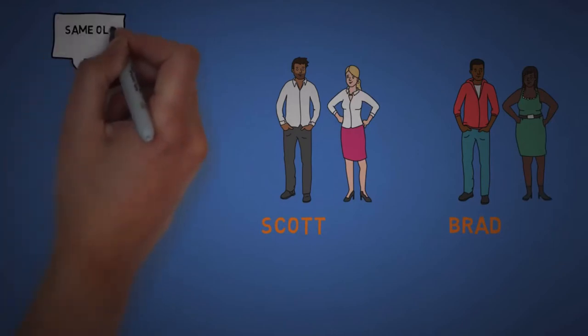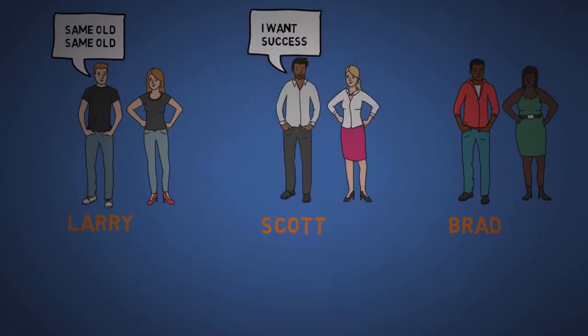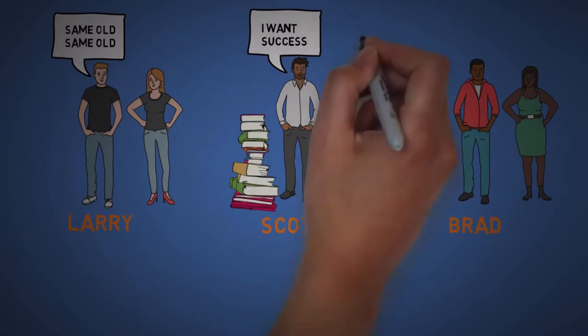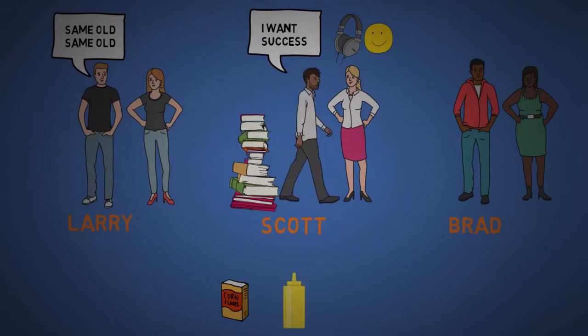Larry thinks he's happy, but complains occasionally that nothing ever changes. Now, Scott begins to make small changes, like reading 10 pages of a good book daily and listening to 30 minutes of something inspirational on his way to work. He cuts off 125 calories from his diet, which is like a cup of cereal or less, or like switching from mayo to mustard in a sandwich. He also starts walking a few extra thousand steps a day. Less than a mile, nothing huge.